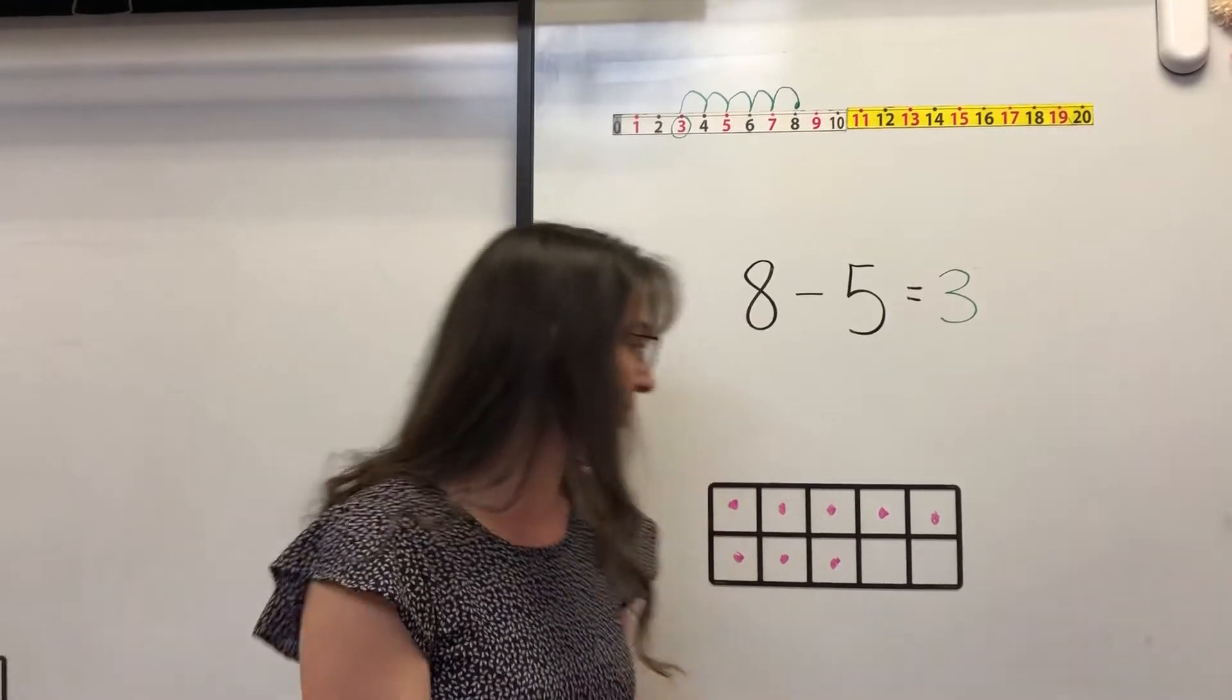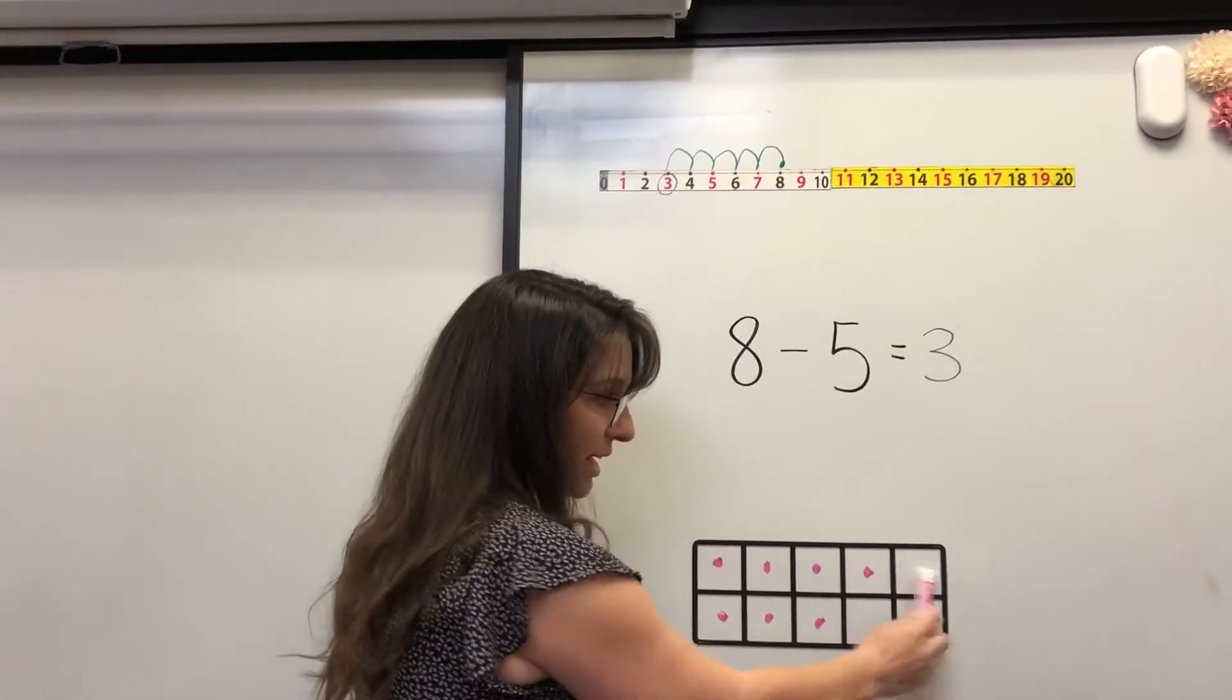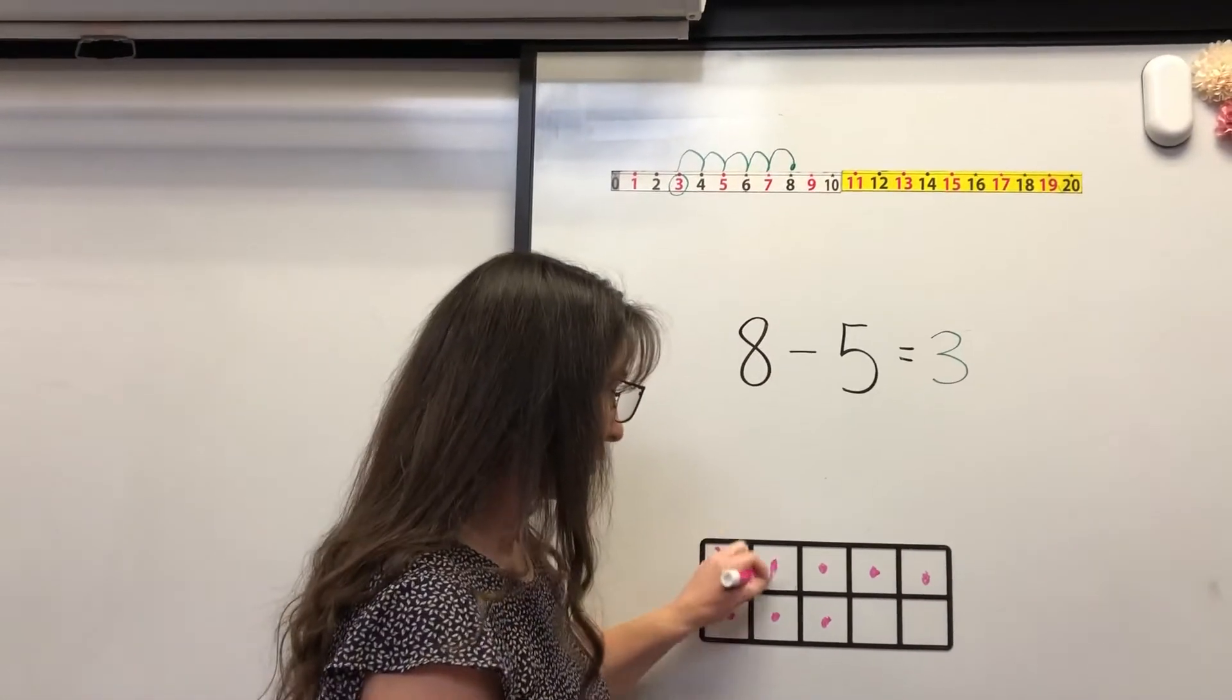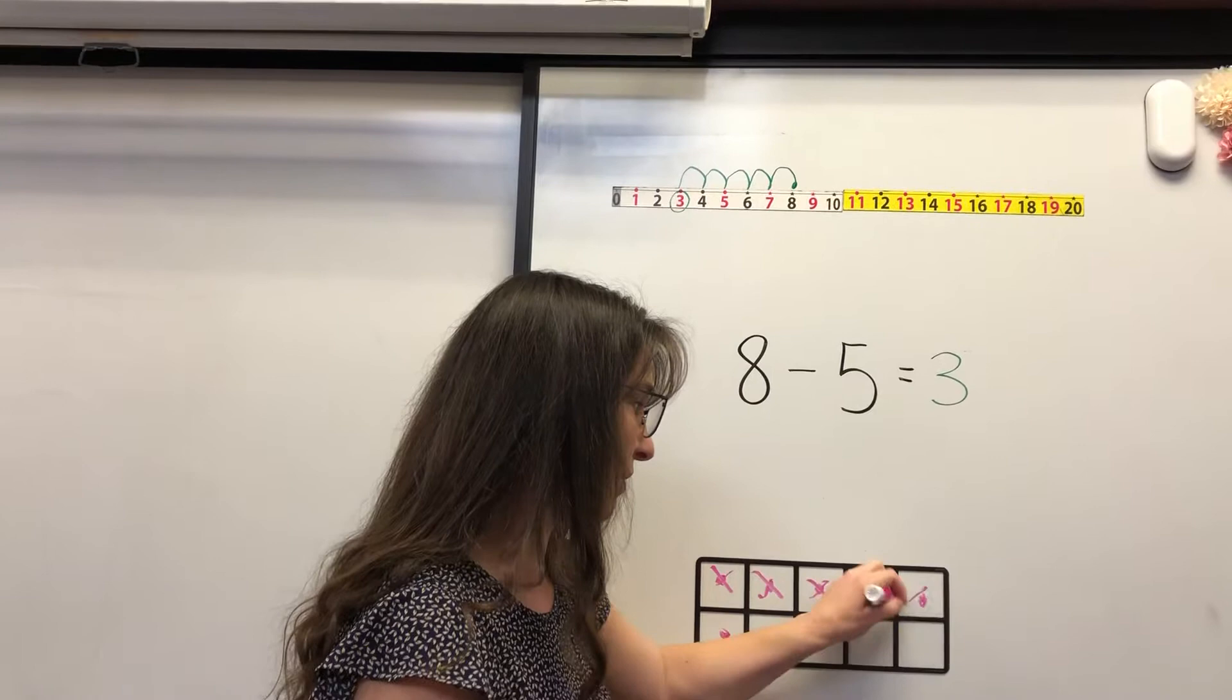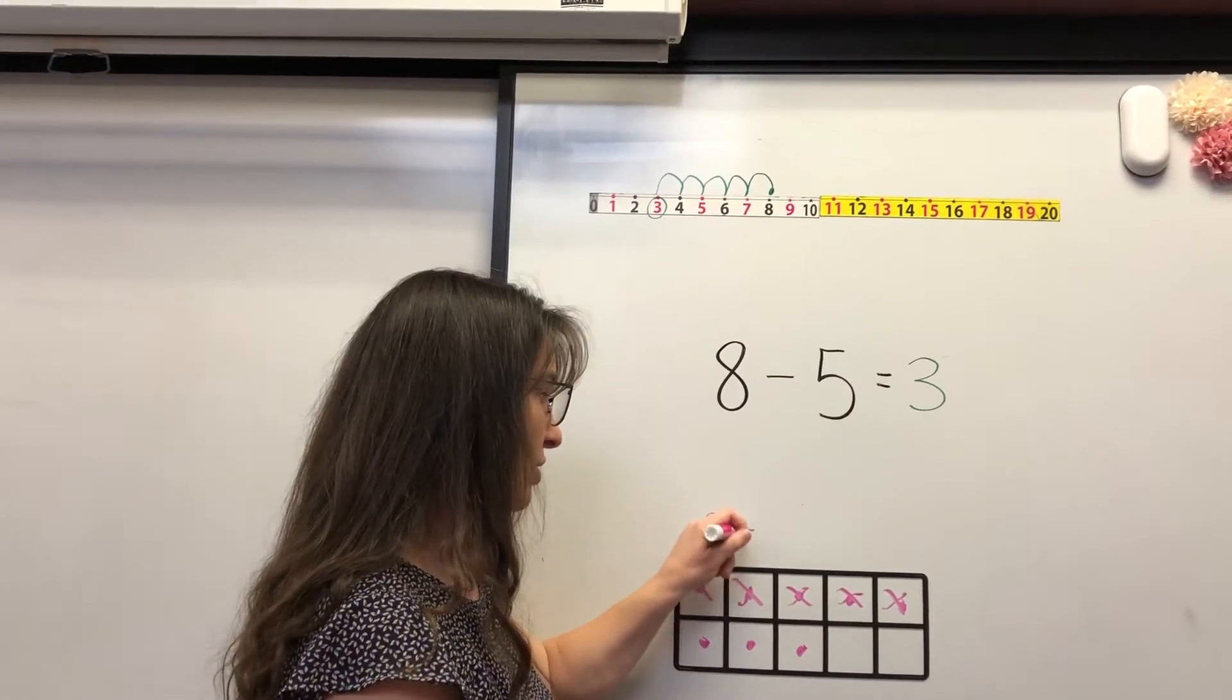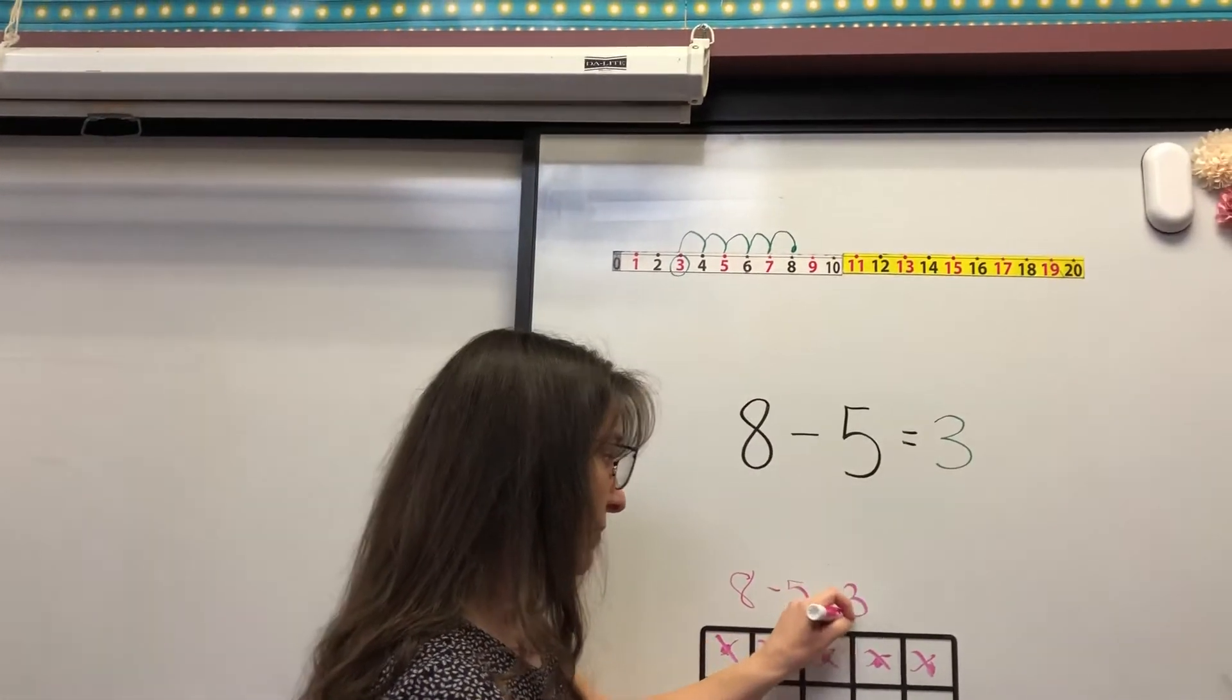So it's same thing on here. If we just say we're going to take away 5 now, we've just taken away the whole top row. So taking away these 5 would leave us with 3. If you have 8 and you subtract 5, which is the whole top row, you have 3 left.